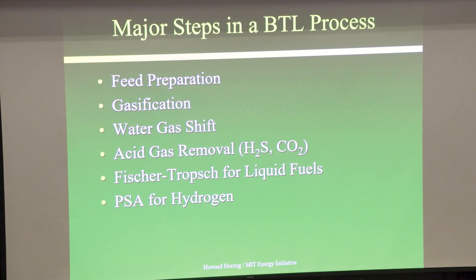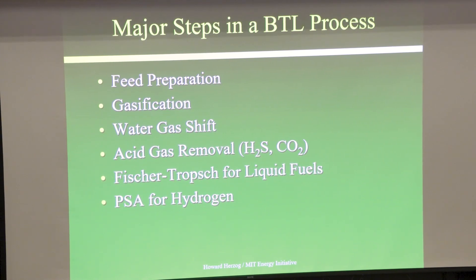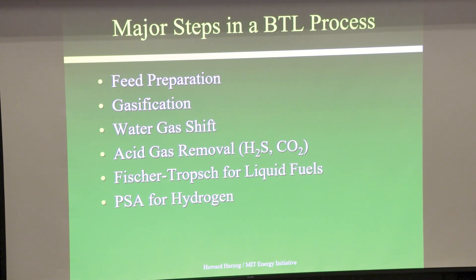Then you have to do the gasification. When you come out, you want to do the water-gas shift to basically create a syngas — depending on where you're going, how much shifting you do to get the right ratio. If you're going to Fischer-Tropsch, you need a ratio of carbon monoxide to hydrogen. You remove your acid gases — this is where you remove your CO2. Then you do your Fischer-Tropsch if you want liquid fuels, or if you want hydrogen, you can do a pressure swing absorption process.